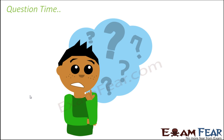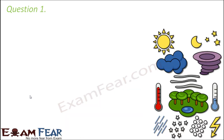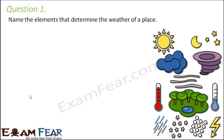Question number one: name the elements that determine the weather of a place. As I have mentioned before, weather is not just one thing — it is a lot of factors, and how all these parameters behave at a particular case will define the weather of that place for a particular day. The important elements are temperature.